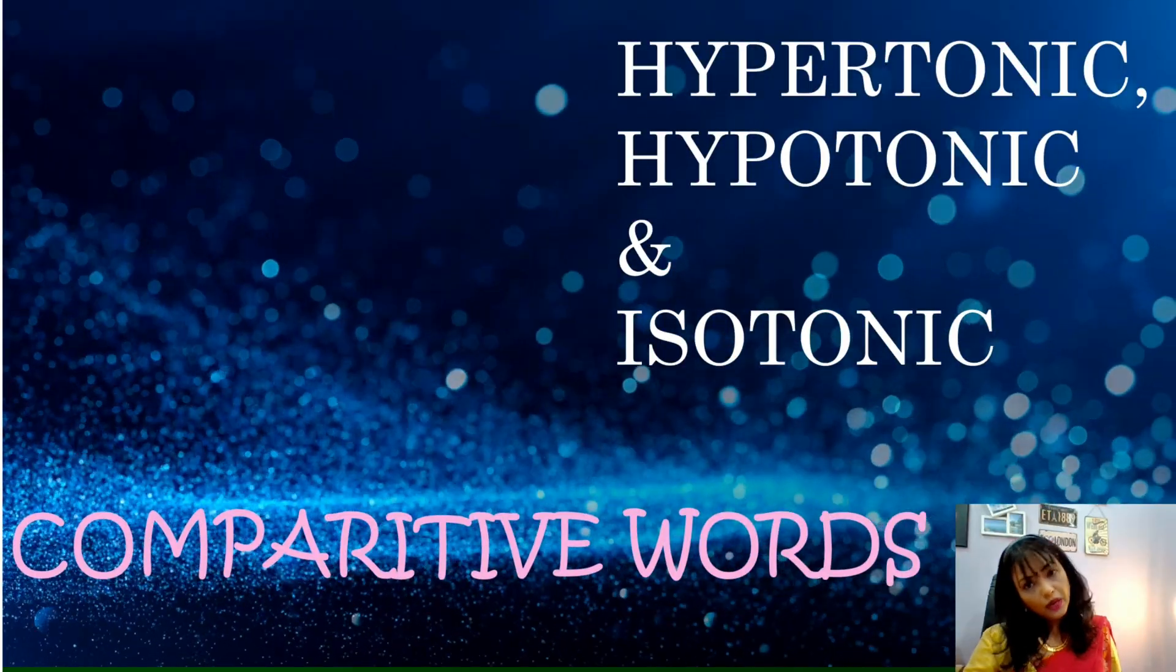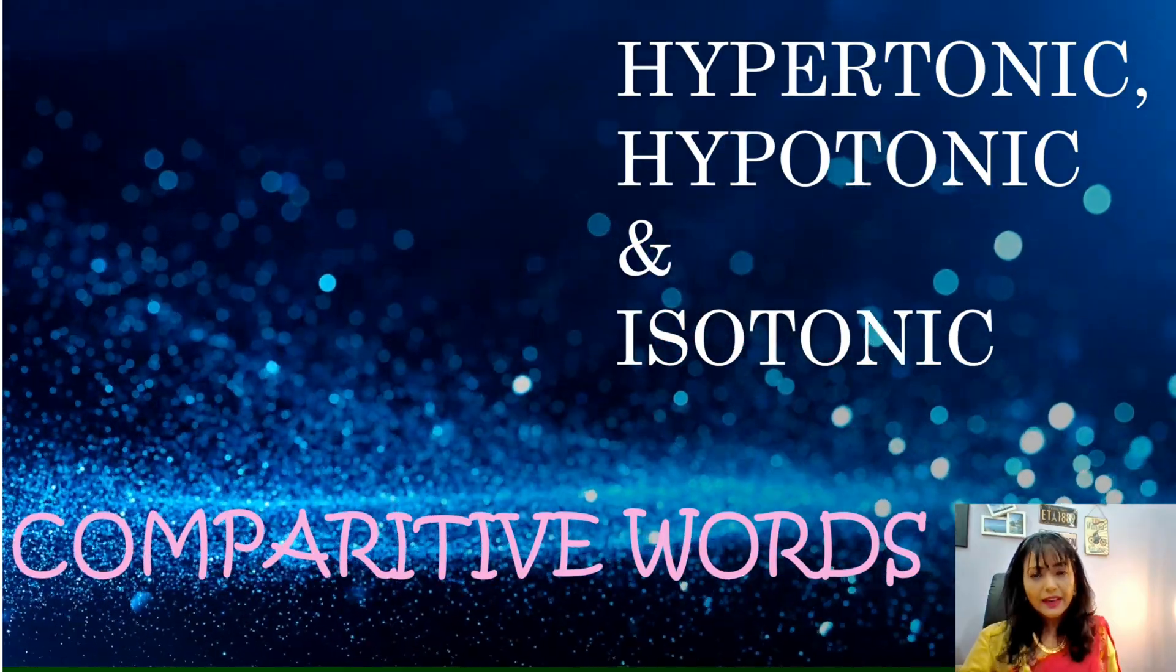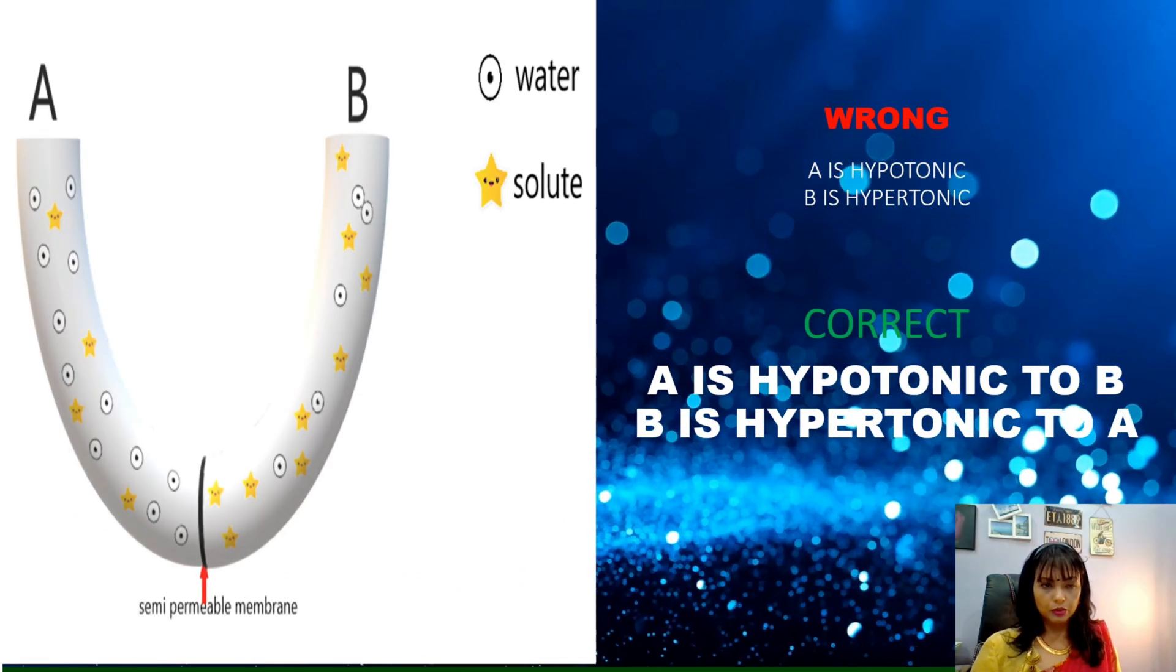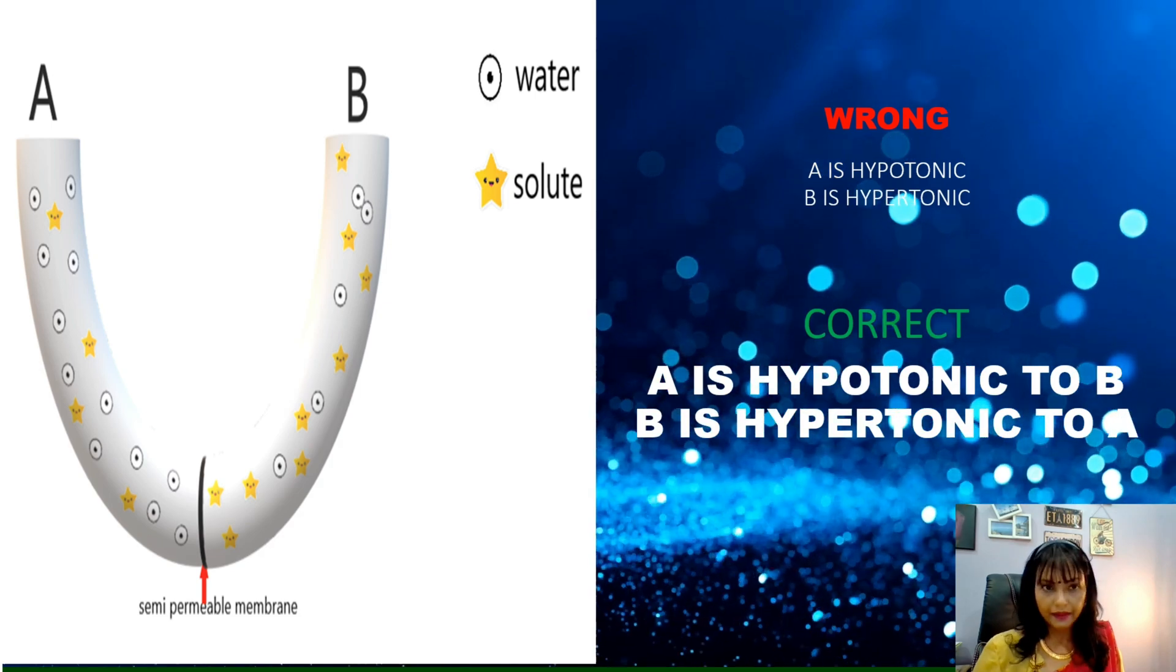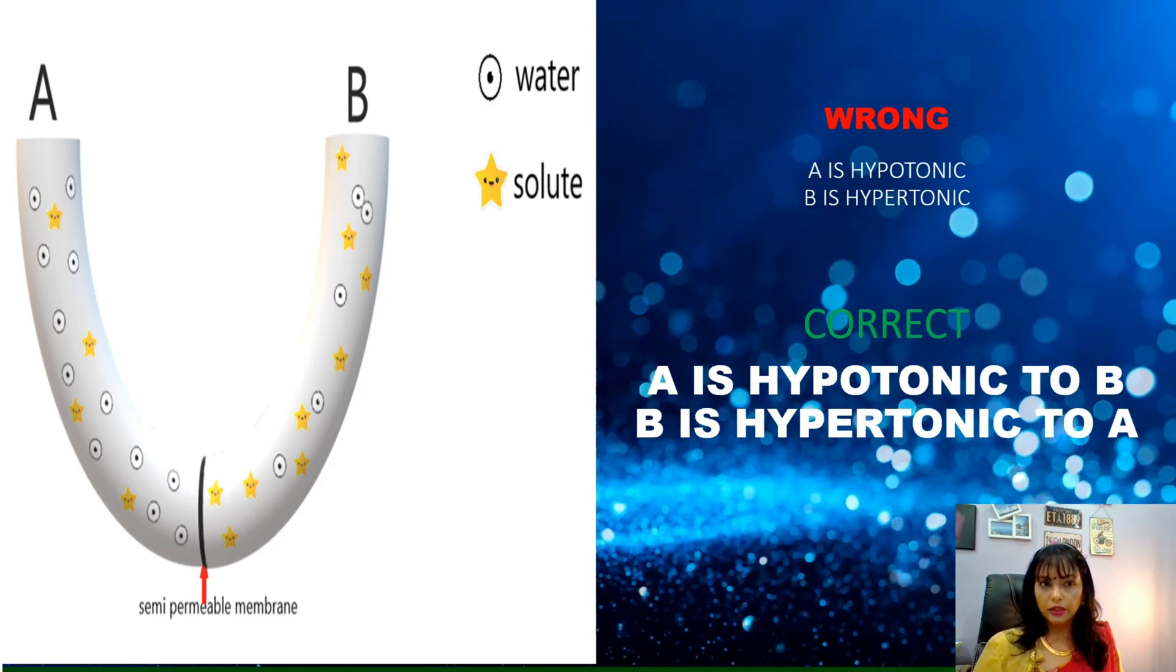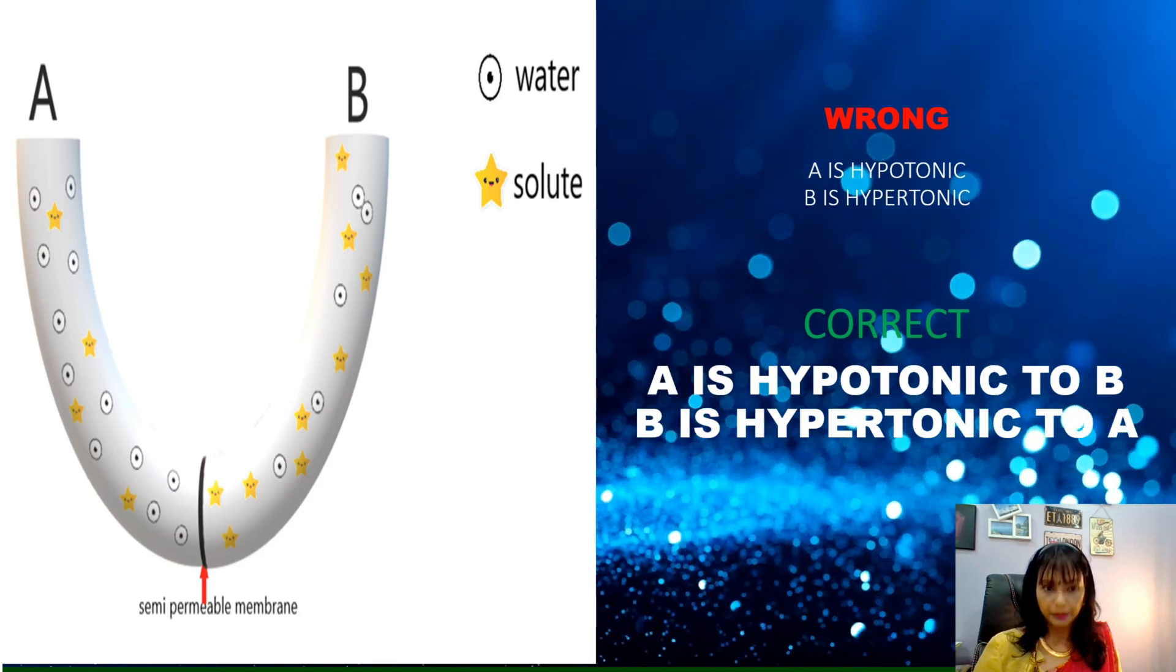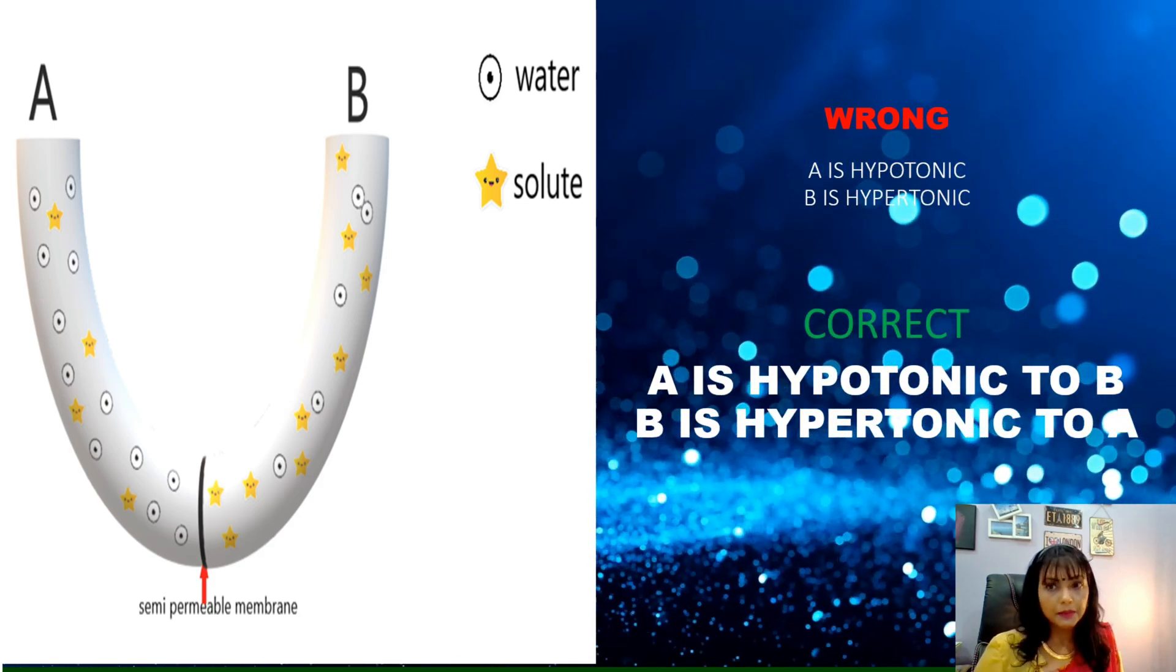Here I would like to highlight that hypertonic, hypotonic and isotonic are comparative words. What do I mean by that? To show that hypertonic and hypotonic are comparative words, we are going to discuss a system whereby you have A and B and these two systems are properly separated by semi-permeable membranes.